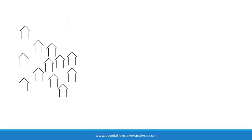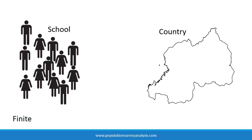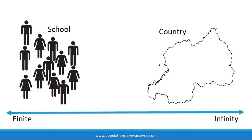In sampling terminology, we refer to small populations, such as the population of a village or a health center or school, as finite populations, and we think of very large populations, such as the population of a province or a country, as approaching infinity. A sample of, say, 500 people in a finite population results in greater precision or less variance than in an infinite population.